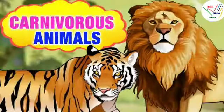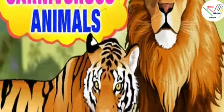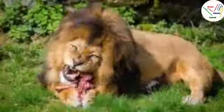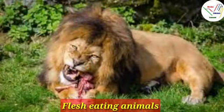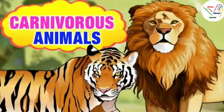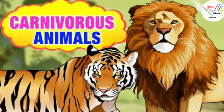Second type of animals are carnivores. Animals that eat flesh of other animals are called carnivores. For example, tiger, lion, etc.